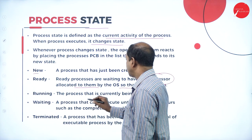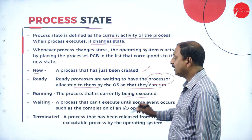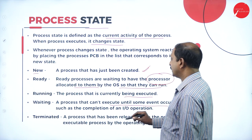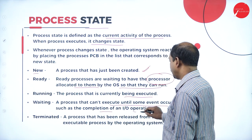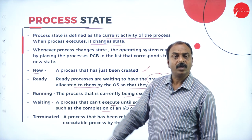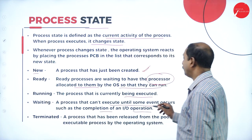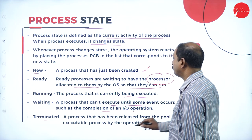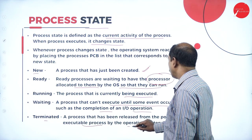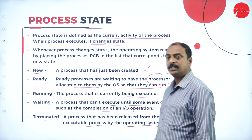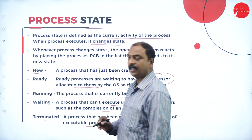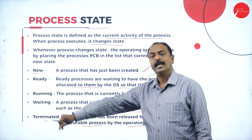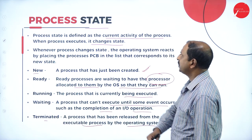Next is 'running': the process that is currently being executed is in the running state. Then 'waiting': the process cannot execute until some event occurs, such as completion of an IO operation — it is a process waiting for computer resources. Next is 'terminated': a process that has been released from the pool of executable processes by the operating system. Once the process has been completed, it has to be terminated. These are all the different states of a process.